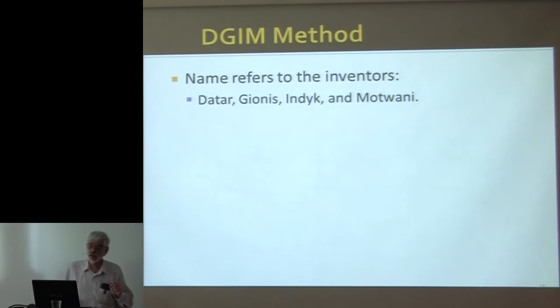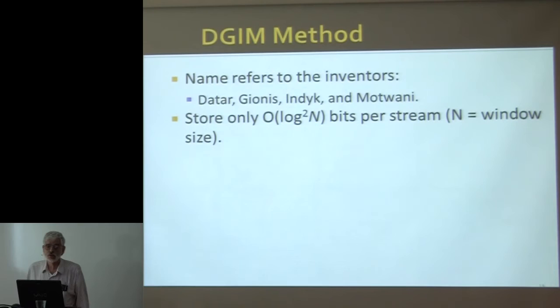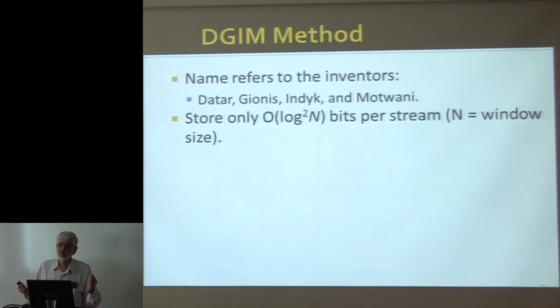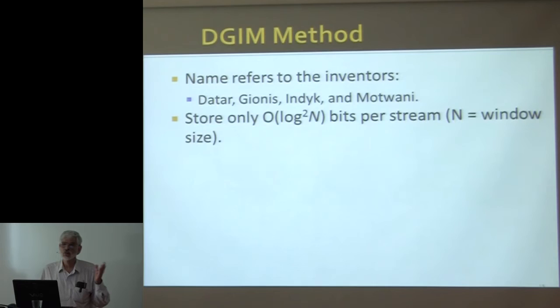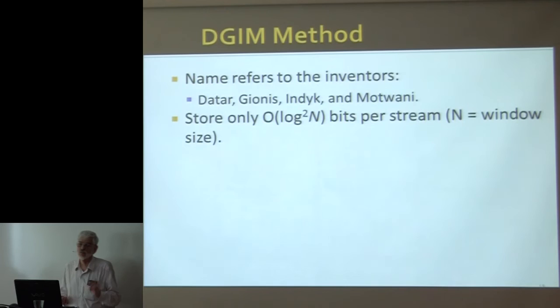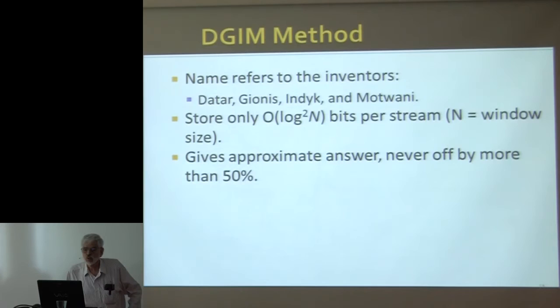I want to talk about an algorithm called DGIM, named after four colleagues. The interesting thing is it can maintain windows of length n but only has to store O(log² n) bits per stream. If n is a billion, log base 2 of n is 30, and 30 squared is 900 — 900 bits is a lot better than a billion. There's a constant factor hidden by the big-O, but it's still a lot better at that scale. As I said, it gives you an approximate answer — in the version I describe, it can be off by as much as 50%, but you can improve that to anything greater than zero error while still using O(log² n) bits, though the constant factor grows inversely with your target epsilon.